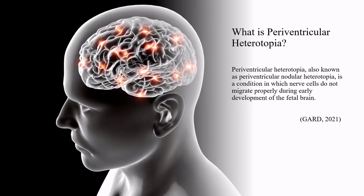Periventricular heterotopia, also known as periventricular nodular heterotopia, is a condition in which nerve cells do not migrate properly during early development of the fetal brain.